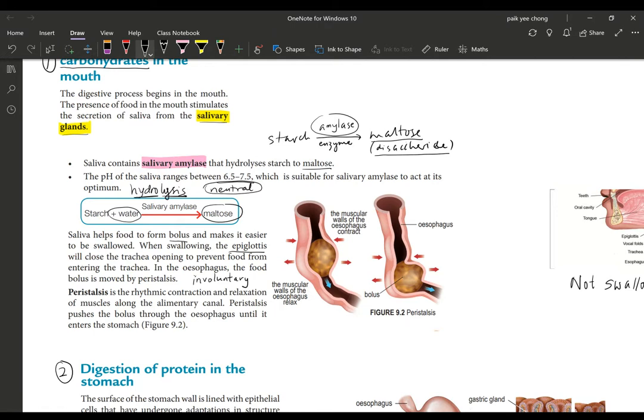Saliva helps food to form bolus. Bolus is the food which is rolled into a ball and that is helped by the action of your tongue when you swallow. Saliva helps to soften the food and form a bolus.